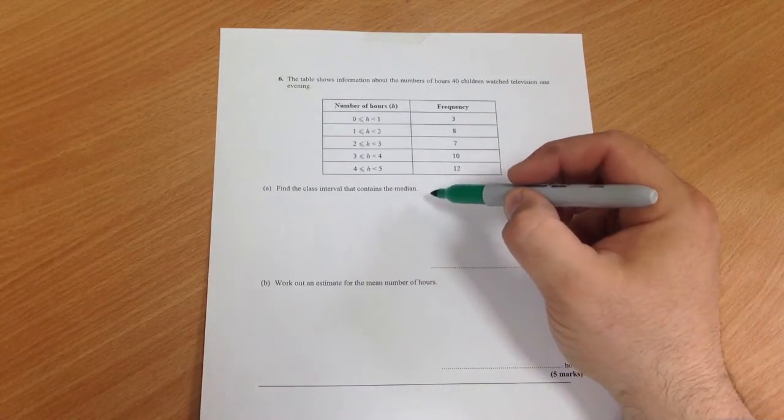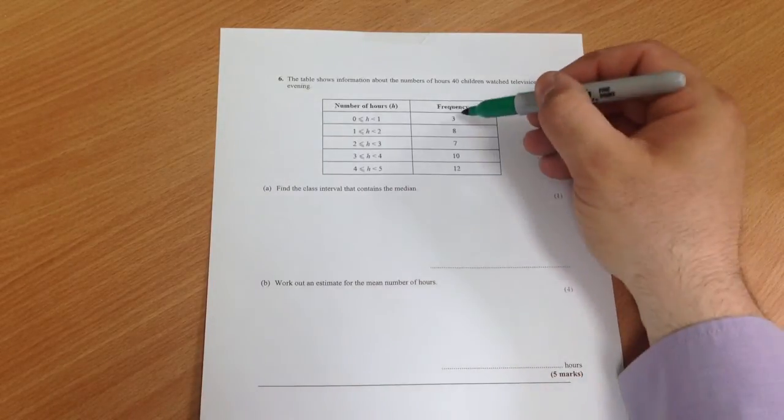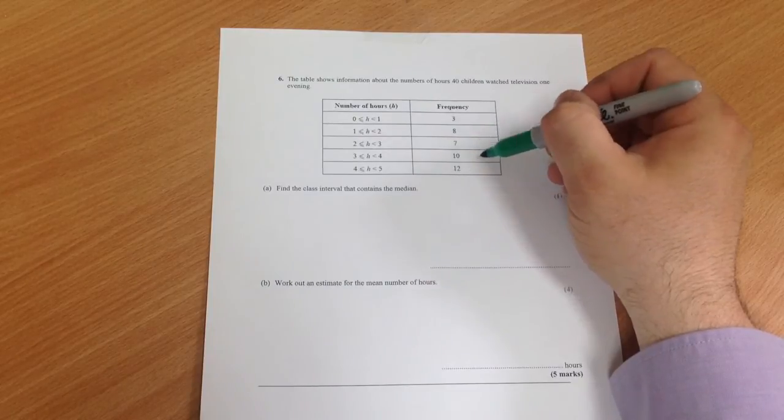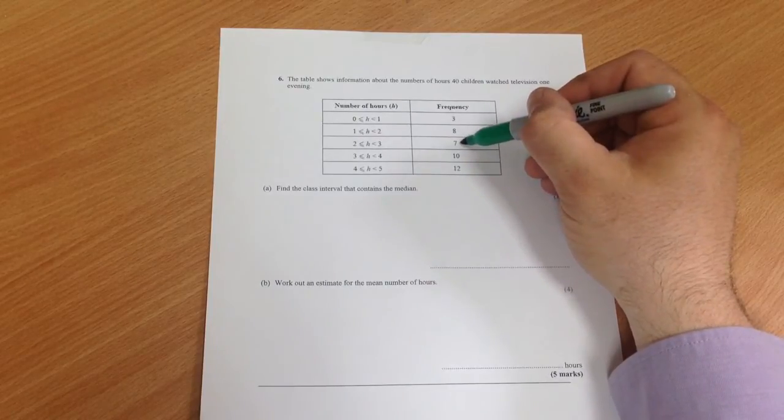Well the median would be in between the 20th and 21st person. So there's the first 3, plus another 8 would be 11, plus another 7 would be 18. So if we're up to 18 there,